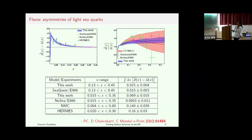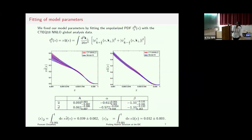To fix the model parameters, with the help of light-front wave functions we calculate the unpolarized PDFs. We take CTAC18 NNLO data and fit our unpolarized PDF with these data for each distribution — this is the fitting for D-bar and this is for U-bar. From each fitting we get the parameters for each distribution. Once the parameters are fixed, we can see our predictions. We found that the average longitudinal momentum carried by D-bar and by U-bar are these respective values.